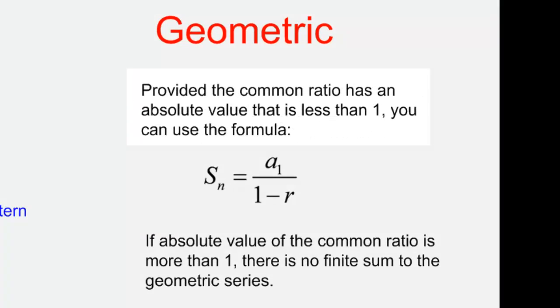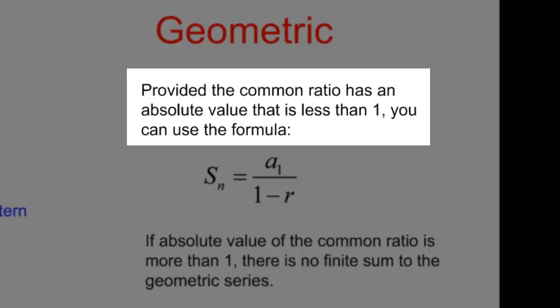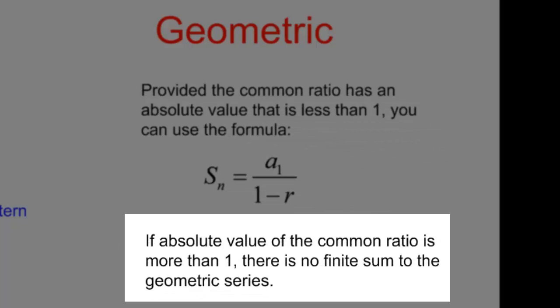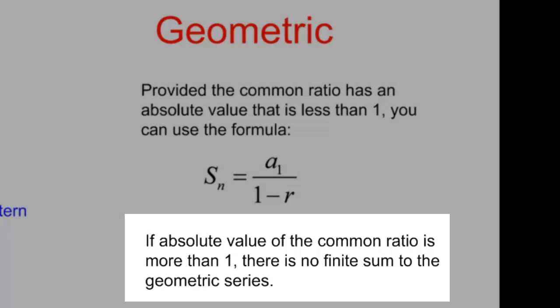With the sum of a geometric infinite series, provided the common ratio has an absolute value that is less than 1, you can use the formula S sub n equals the first term divided by 1 minus the common ratio. However, if the absolute value of the common ratio is more than 1, there is no finite sum to the geometric series.